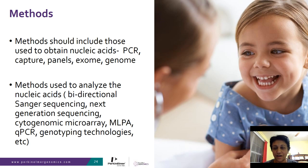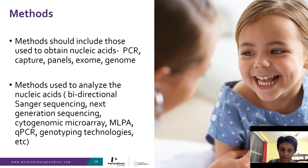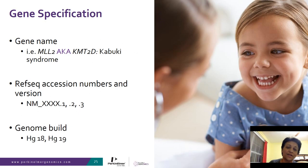For example, if the limitation states that the assay cannot detect copy number variation, you would then order MLPA to identify deletions and duplications in the genes of interest. One other notable issue over the past decade is that gene names keep changing. When I started next-generation sequencing in 2010, the Kabuki syndrome gene was called MLL2; now it is KMT2D — difficult to track even as a geneticist.